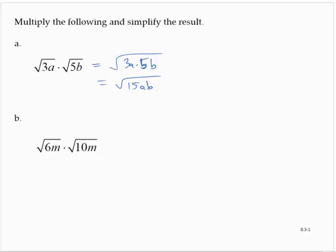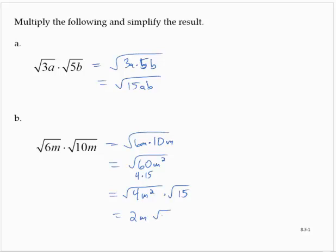Exercise b. We have the square root of 6m by the square root of 10m. So that's the square root of 6m times 10m, which is the square root of 60m square. Now, 60 has a perfect square factor, and m square is a perfect square. 60 is 4 times 15. So I'd have the square root of 4m square by the square root of 15. And so that's 2m times the square root of 15.